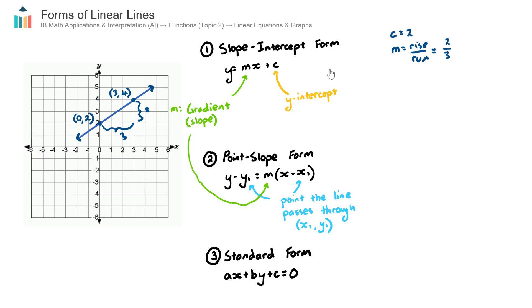Now that I have these two values, I can substitute them into my slope-intercept form and write down the equation of this line. So the equation will be y equals — m is my gradient, so 2/3 — times x, plus c which is my y-intercept, which for this question is 2. So y = (2/3)x + 2. That is the equation of this blue line in slope-intercept form.